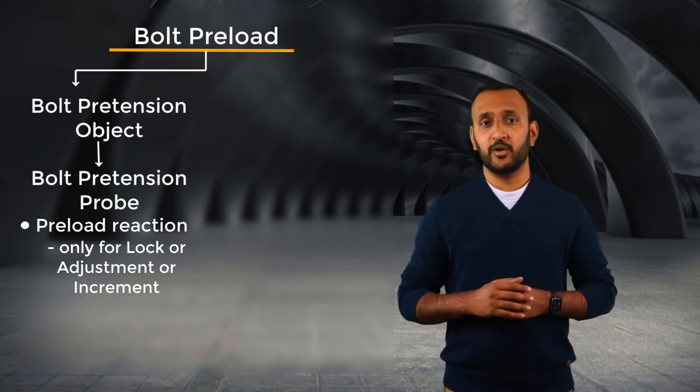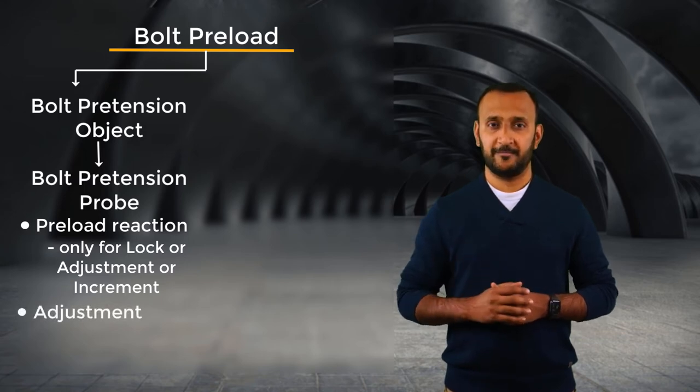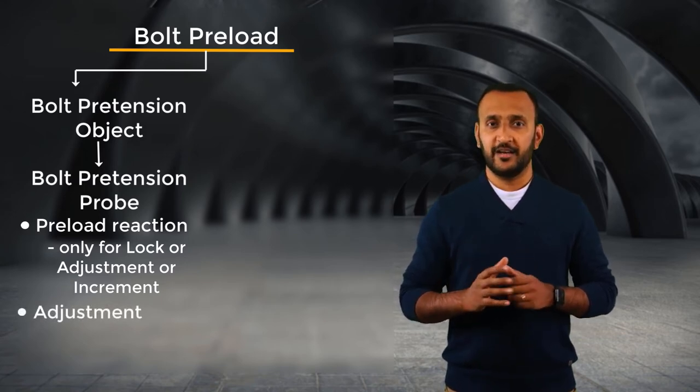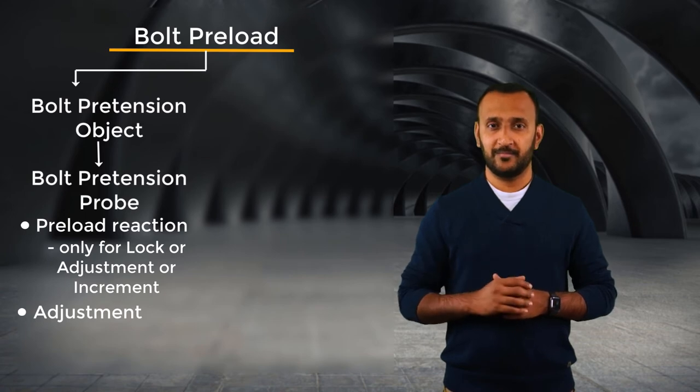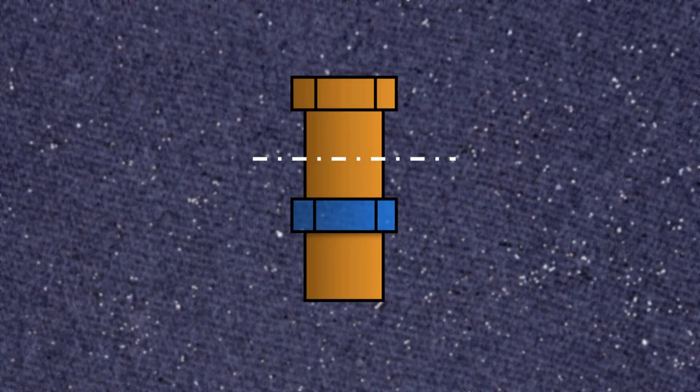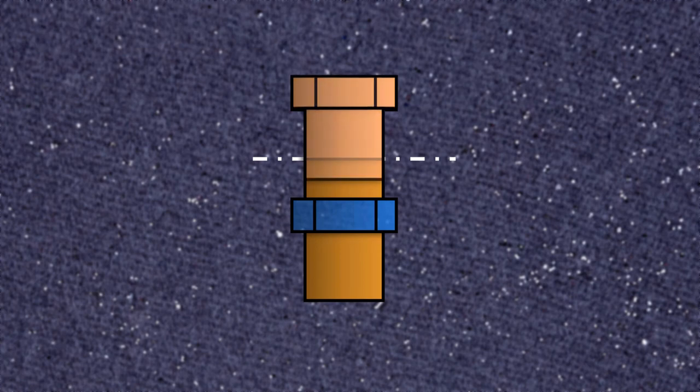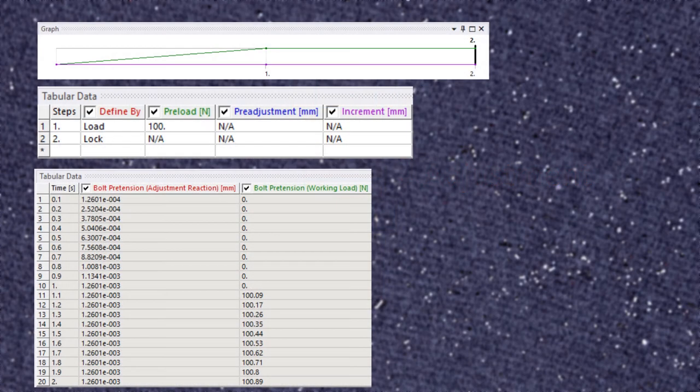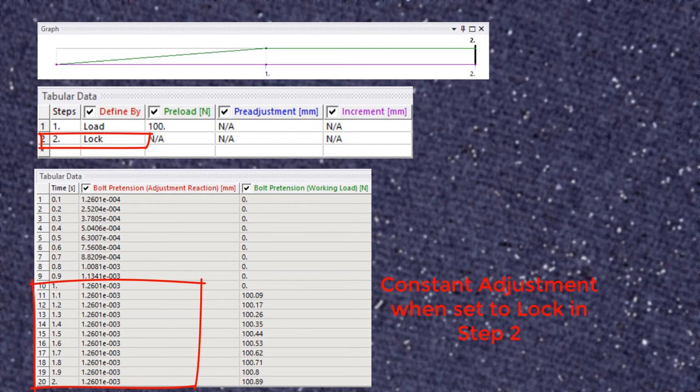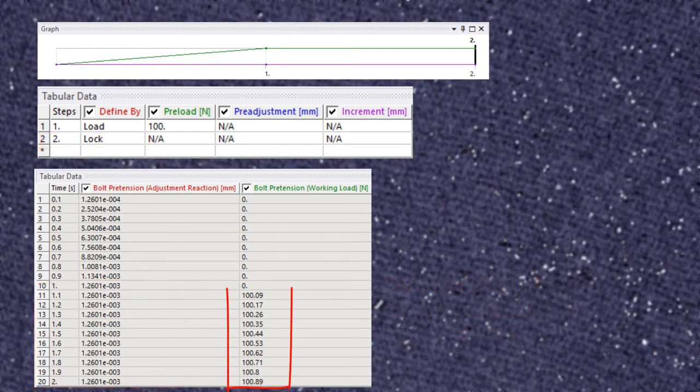The second quantity that is reported by the bolt pretension probe is adjustment. This quantity represents the change in grip length due to preload. It is a displacement that occurs from the applied pretension measured at a point where the bolt is sliced. When the desired pretension is set to lock, this adjustment is fixed and the constraint maintains it unless the pretension is set back to either load or open. The bolt is still free to deform under additional applied loads, as only the relative displacement at the cut surfaces of the bolts are fixed.